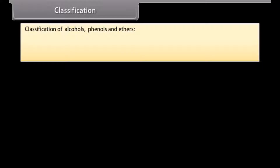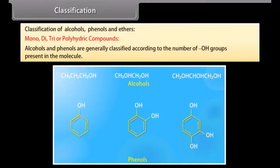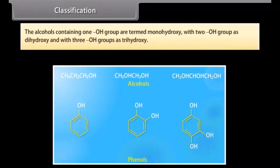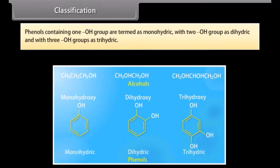Classification of alcohols, phenols and ethers — mono, di, tri or polyhydric compounds. Alcohols and phenols are generally classified according to the number of hydroxyl groups present in the molecule. Alcohols containing one hydroxyl group are termed monohydroxy, with two hydroxyl groups as dihydroxy, and with three hydroxyl groups as trihydroxy. Phenols containing one hydroxyl group are termed monohydric, with two as dihydric, and with three as trihydric.